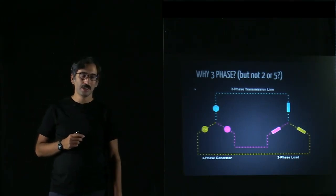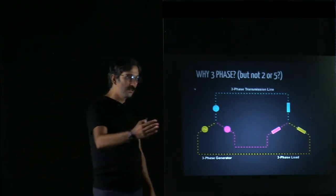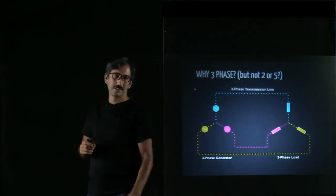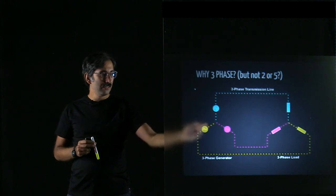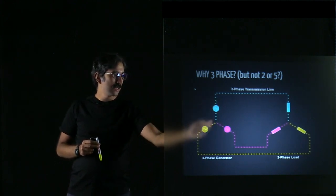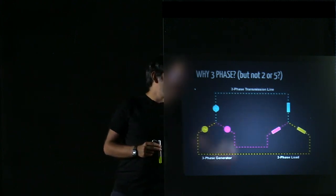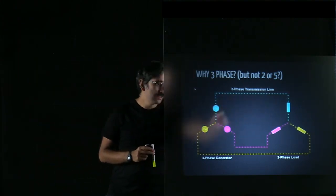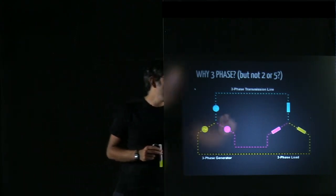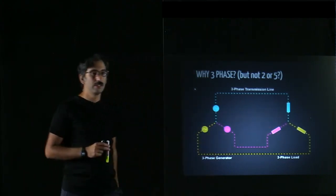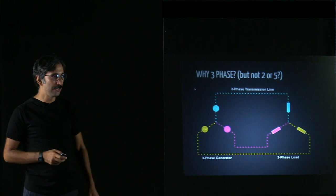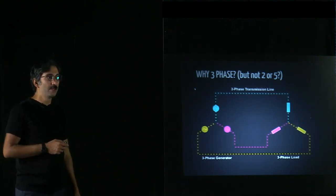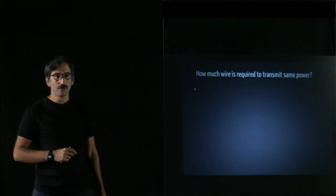In a three-phase system we have sources and loads: first phase, second phase, third phase, each with its corresponding load. You can see the current flow, and importantly, we don't need any neutral line if the load is balanced. This is one of the main reasons why we use a three-phase system.